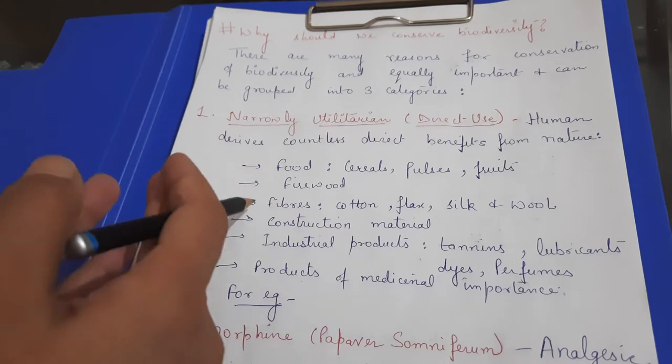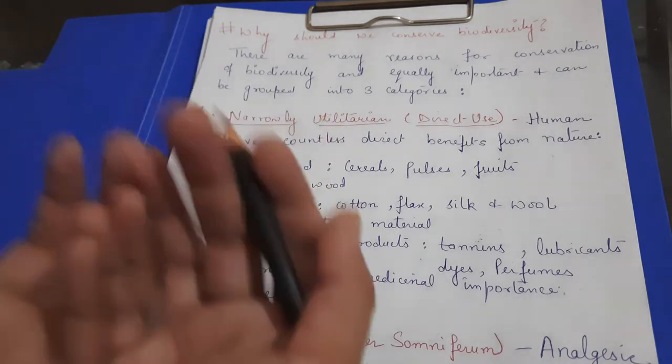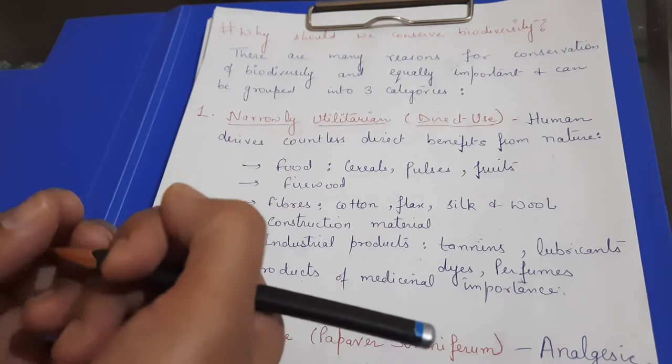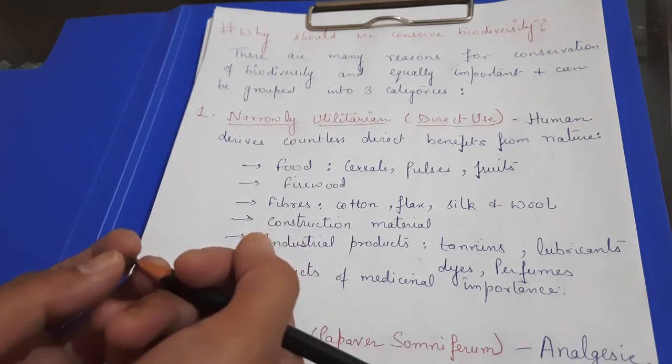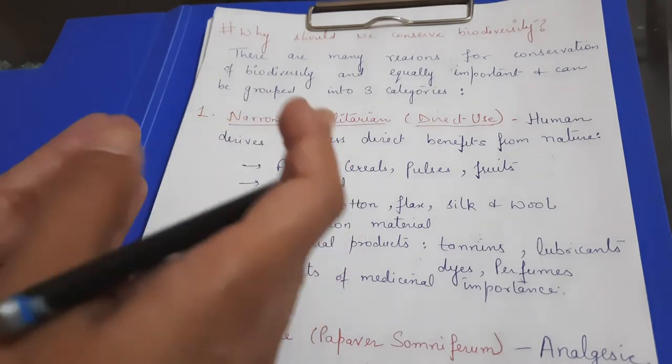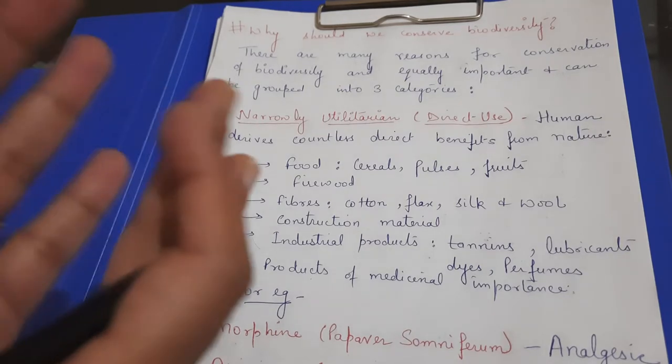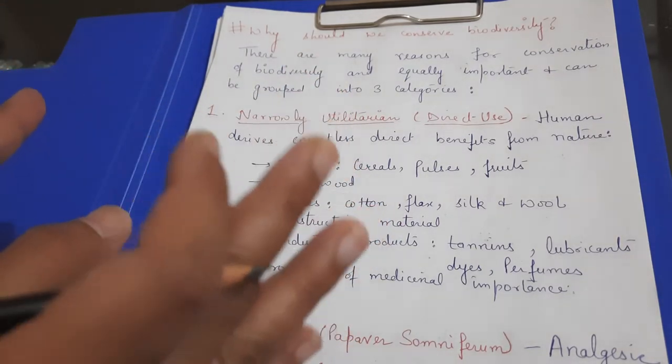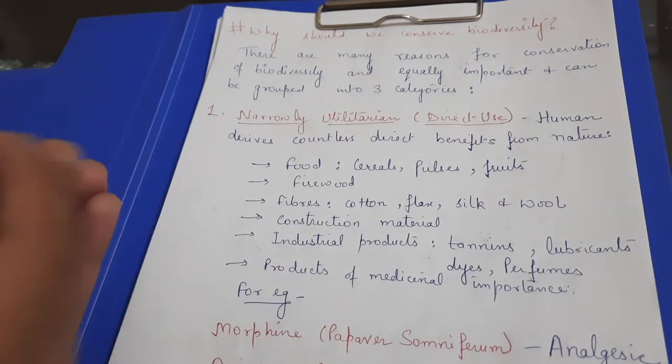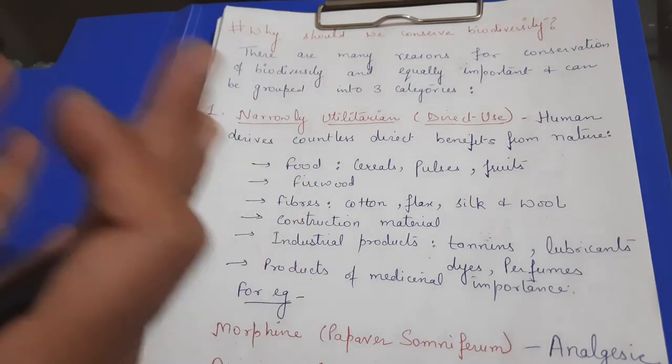We have discussed habitat loss and fragmentation, that we are having habitat loss, so there is biodiversity loss. Fragmentation, over-exploitation, alien species invasion. Then last which we have discussed, co-extinctions. So there are reasons that biodiversity loss, extinction, some risk. But there is a reason. But now we have to say, why should we conserve biodiversity?